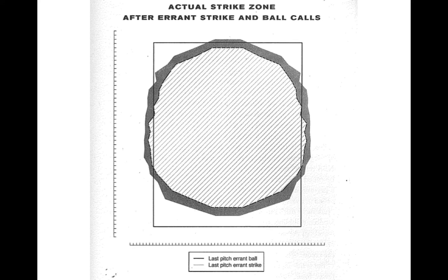On the other hand, if the umpire's call on the previous pitch was a ball that was actually a strike, you can see — evidenced by the dark area outside the hatched area — that that area is now within the strike zone. So the umpire is likely to call a strike on a pitch in the hatched or gray area. The umpire is perhaps subconsciously making decisions about whether a pitch is a ball or a strike based on the previous pitch.